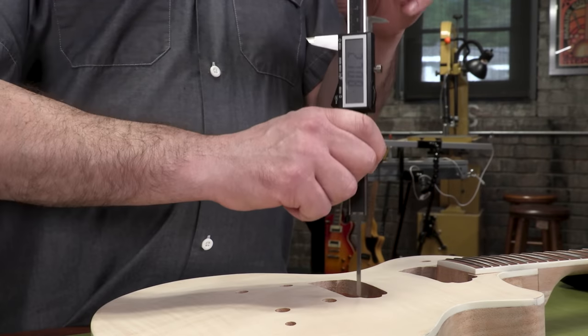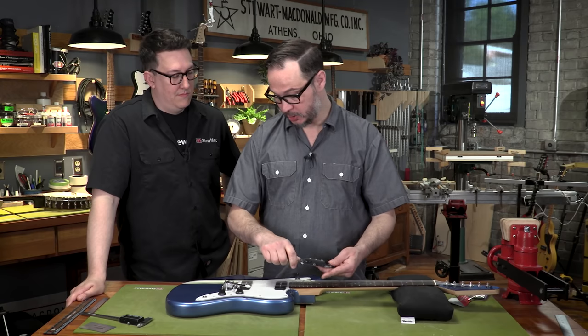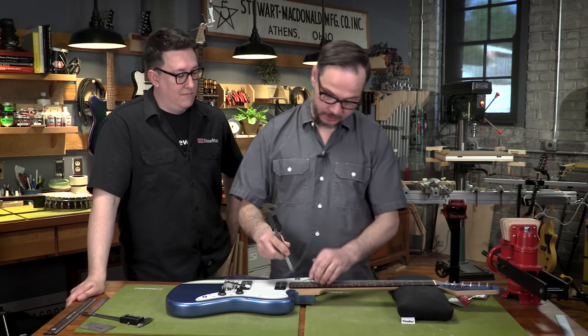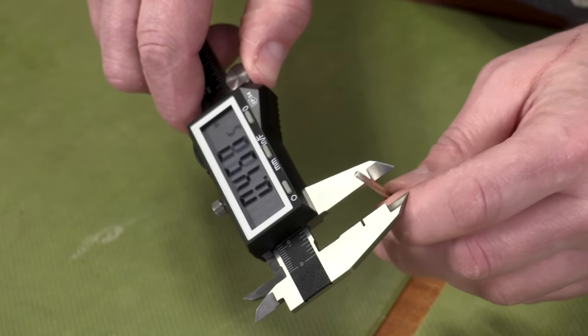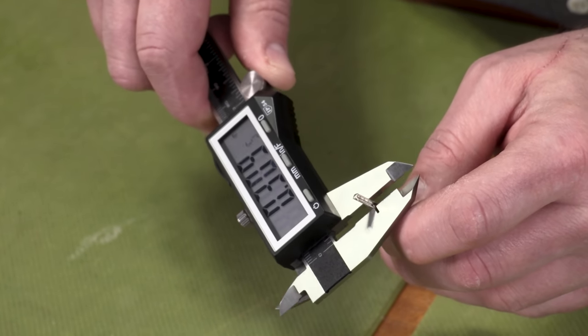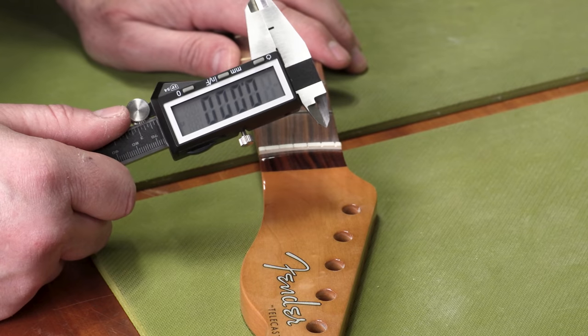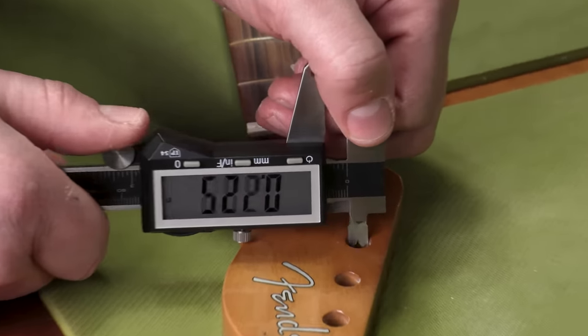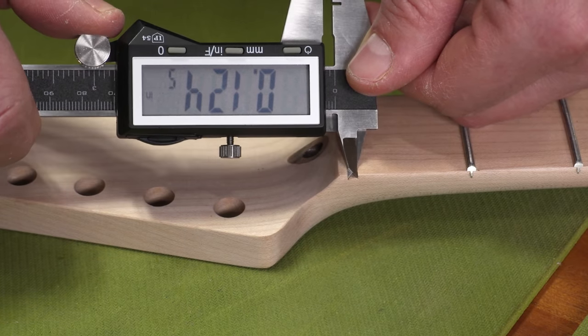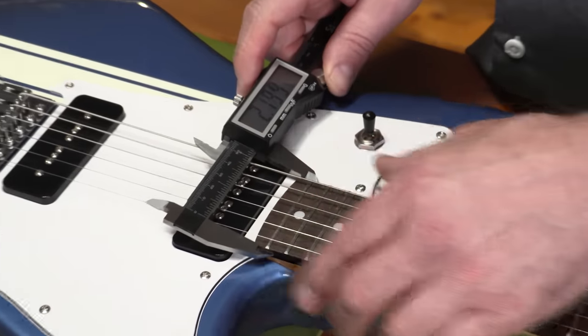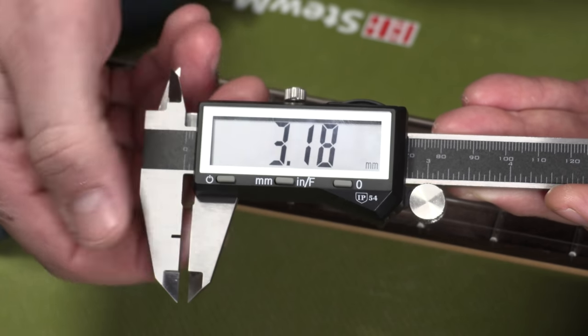Let me show you what else these can do. It has a depth gauge for checking things like pickup cavity depth. You can also check fret height right on a guitar. We have the specially ground notch, which you won't find on other calipers. We also have this notch for checking fret height off of a guitar. You won't find that on other calipers either. And these smaller jaws on the other side are great for inside measurements on things like the diameter of tuner holes, the width of a nut slot. Everything you measure has a super precise readout in whatever scale you need. Inches, millimeters, fractions. You can easily switch between the three.